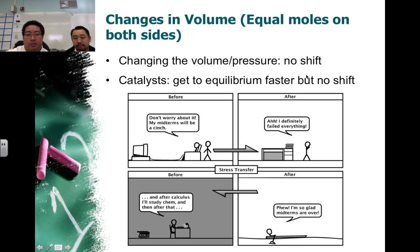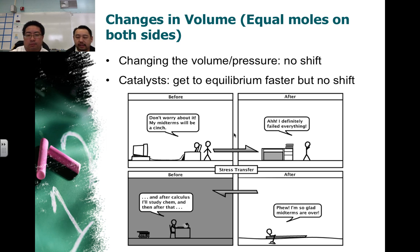Changing the volume or pressure is no shift when moles are equal on both sides. Catalysts will get you to equilibrium faster, but catalysts will have no effect on equilibrium either. This applies when you have equal moles on both sides of the reaction for gases.